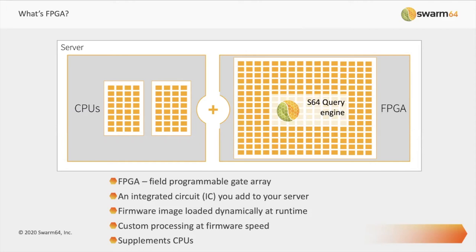That software runs at near firmware speed. The other nice thing is that it supplements the CPU. If you have a Postgres server that's doing transaction-heavy processing but you also want to enable reporting and querying, and those two interfere with each other, what people almost always do is set up separate servers — one for transactions, one for reporting — with ETL in the middle to keep them synced. With FPGA, you can deal with mixed workloads much more easily: the CPUs continue to do the transaction processing, and the querying gets offloaded to the FPGA, which works independently of the CPU.